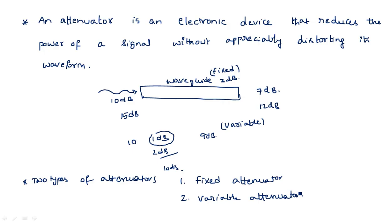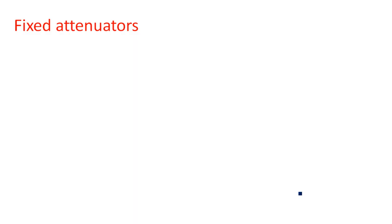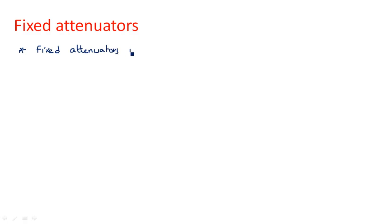Now let us see a detailed description of fixed attenuators. A fixed attenuator is used to reduce the amount of power by a fixed amount always — we cannot change it once it is designed.